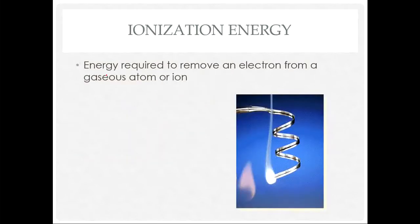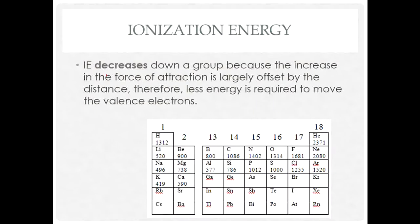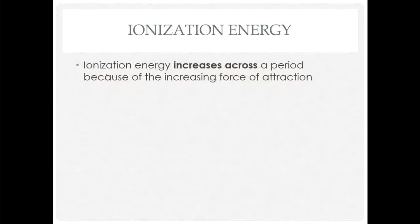Next, let's look at ionization energy — a chemical property of atoms. Ionization energy is the energy required to remove an electron from a gaseous atom or ion. Ionization energy decreases down a group because the increase in force of attraction is largely offset by the distance, meaning less energy is required to remove the valence electron when it's far from the nucleus.